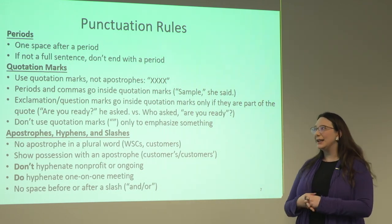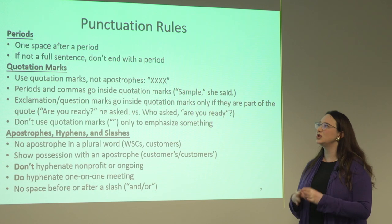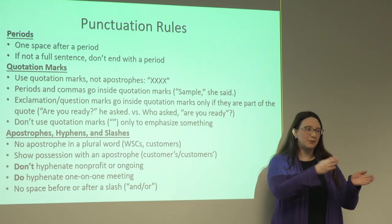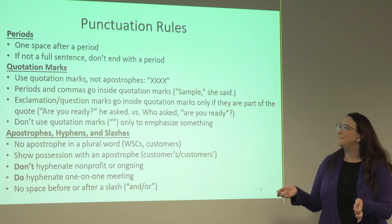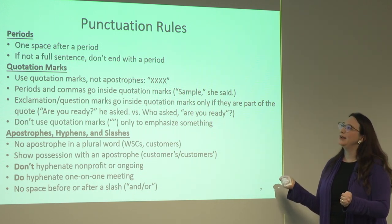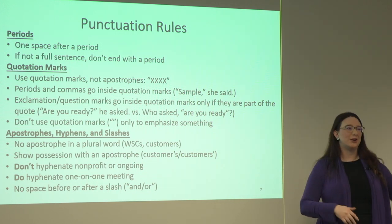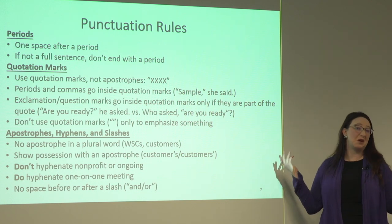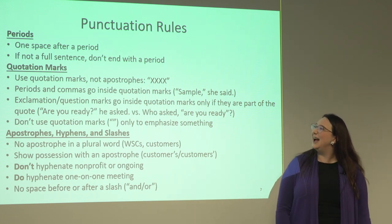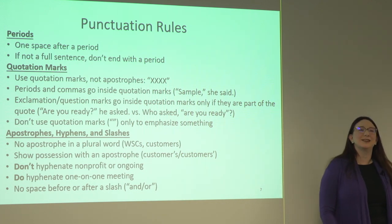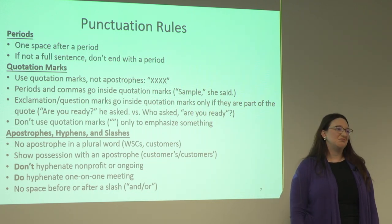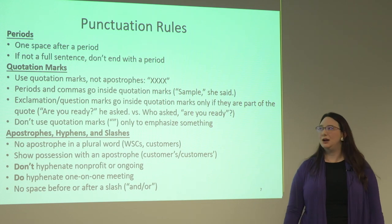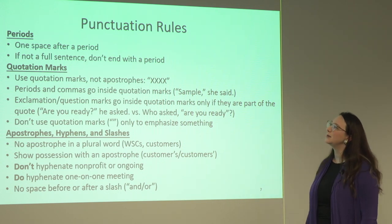About nine years ago, the change was made — instead of a period and two spaces, now it's a period and one space, because after the typewriter died, no one needed two spaces after the period anymore. If it's not a full sentence and it's a bullet point, you don't have to worry about a period. If it's a full sentence, add the period.